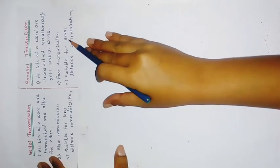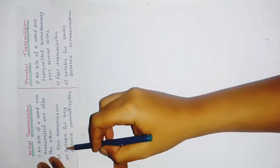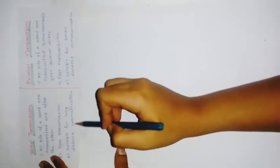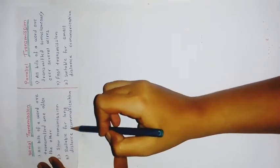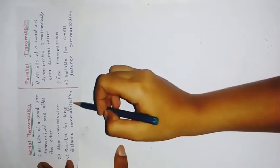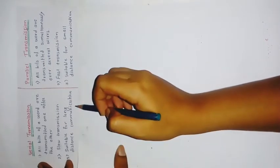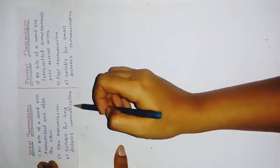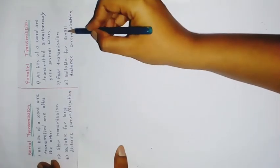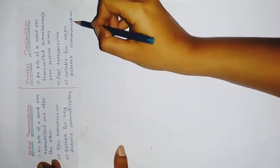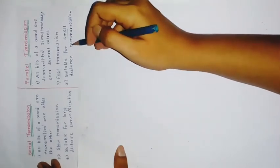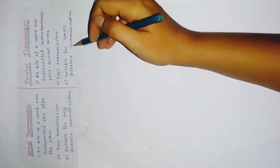The next difference: in serial transmission, it is suitable for long distance communication. Serial transmission is used for long distance communication. Parallel transmission is suitable for short distance communication.